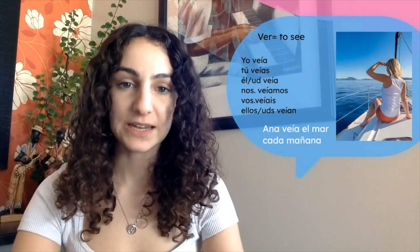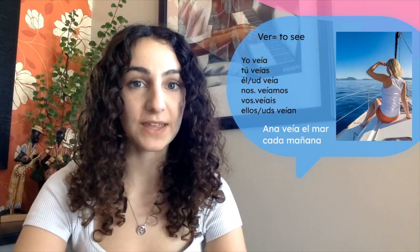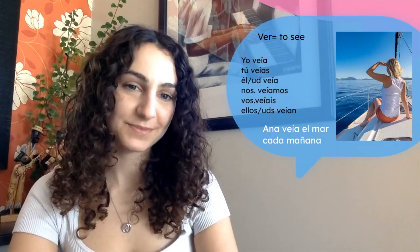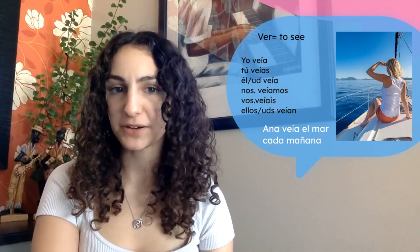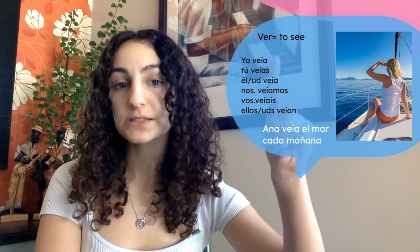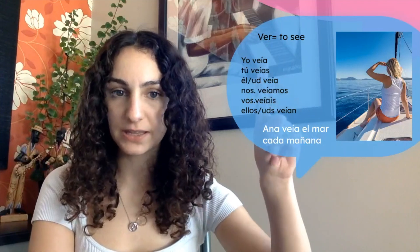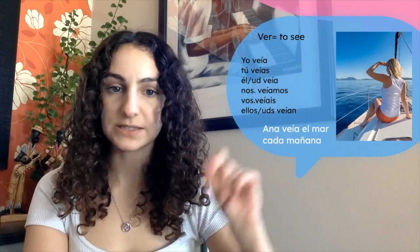Ahora, a ver. Ver — tenemos: yo veía, tú veías, él/ella/usted veía, nosotros veíamos, vosotros veíais, y ellos/ellas/ustedes veían. So again, it's kind of following the same pattern, but it's a little tricky because we have the E still in there — we keep the E and conjugate it as such.